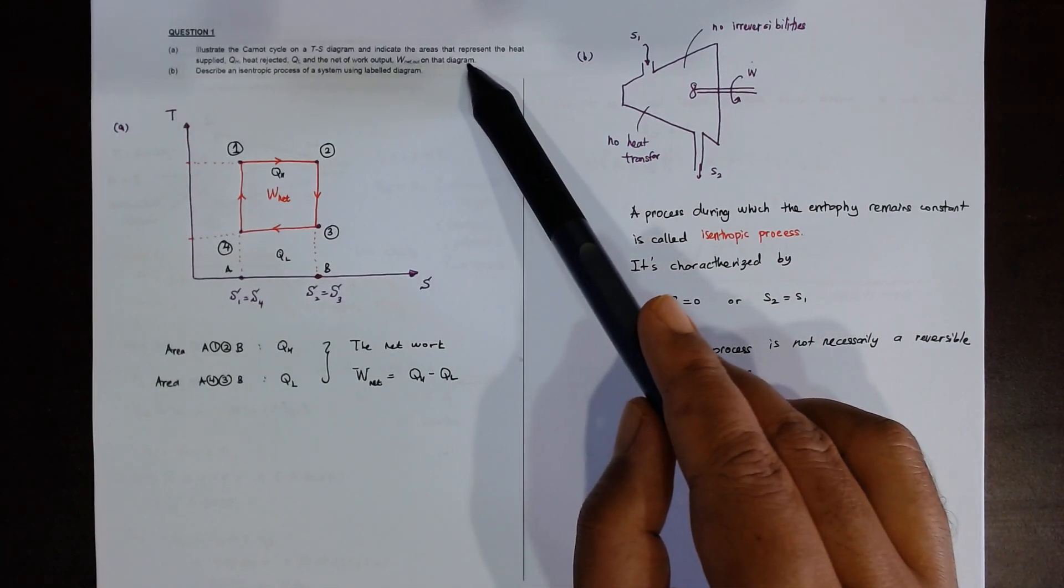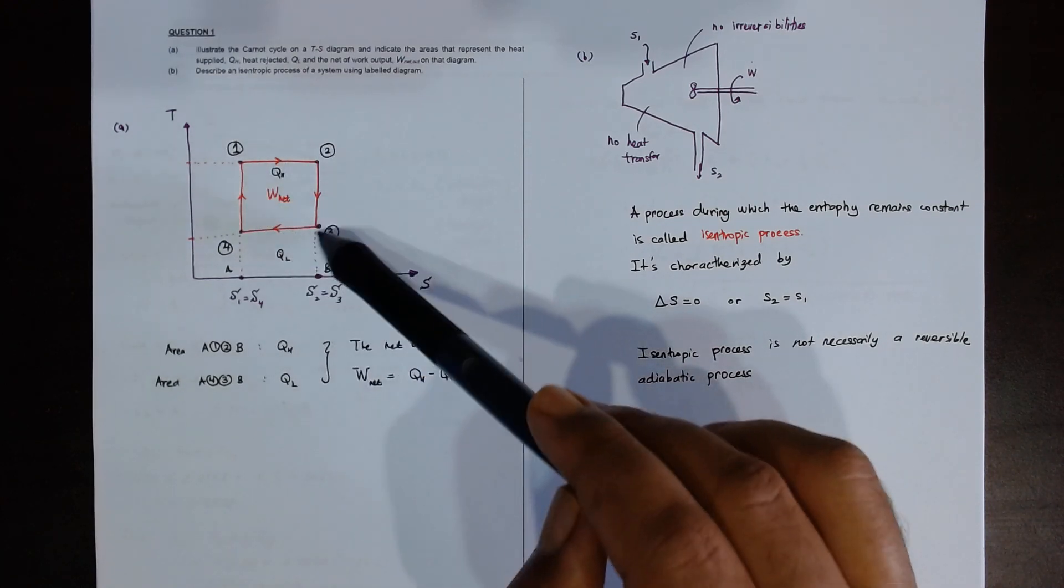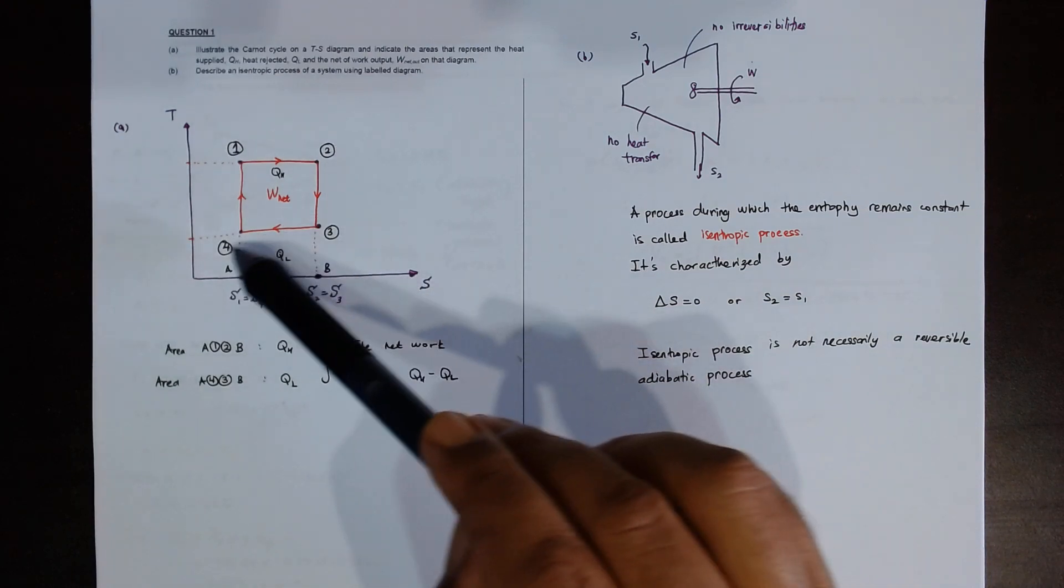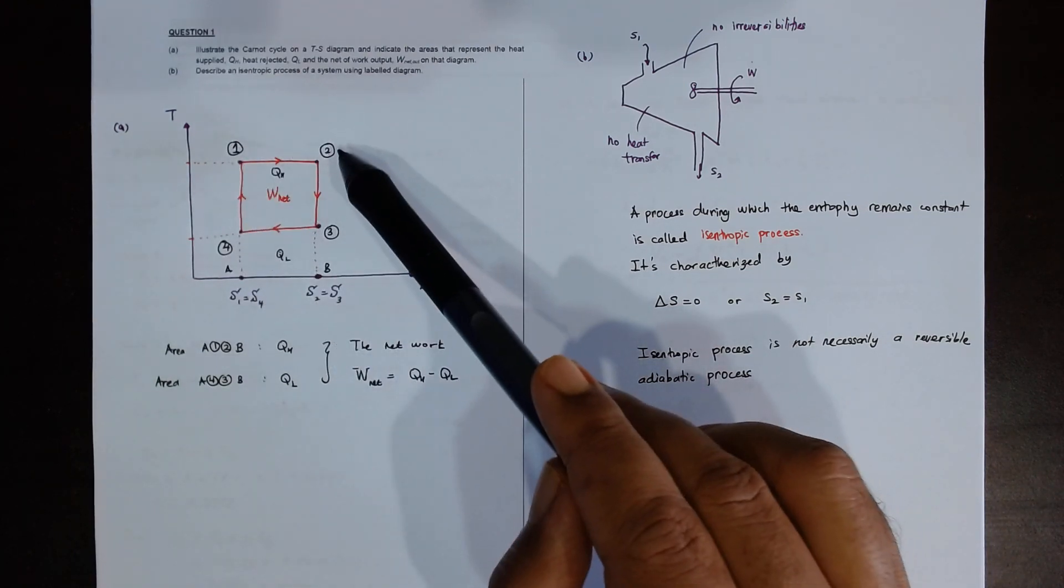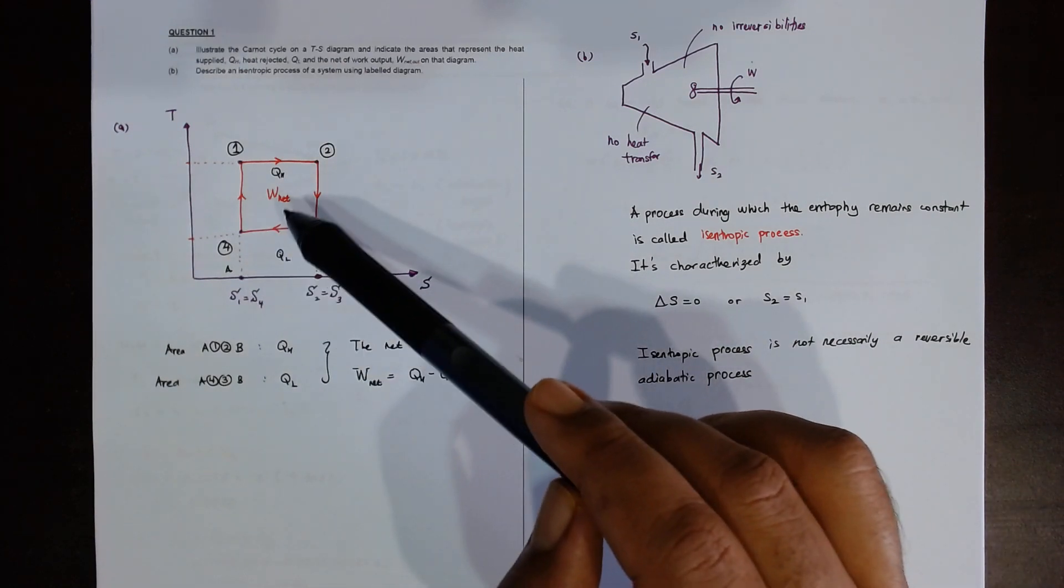So you have a square here, this is a rectangular square. So 1, 2, 3, 4, you can circle the number if you like, if not just 1, 2, 3, 4.